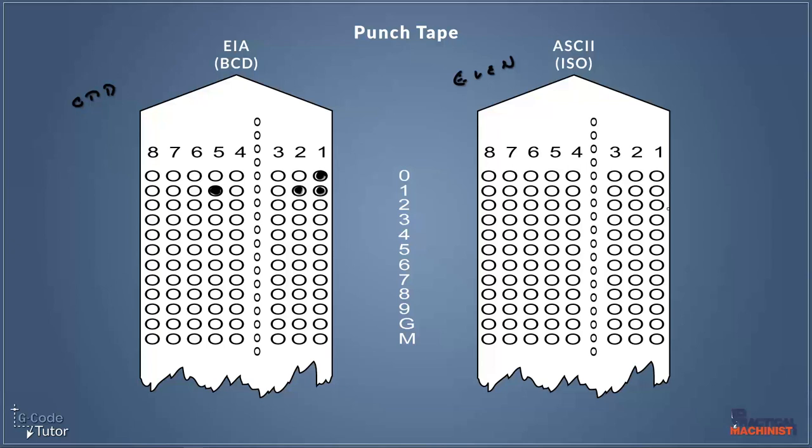Now just out of interest if we have an odd number on an even tape on our ASCII we would add a hole into number eight row eight to make that even whereas EIA we would add a hole into row five so there's always an odd number of holes on each row.